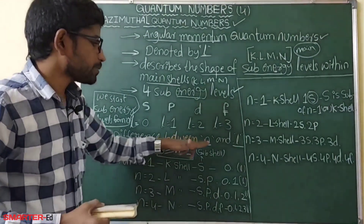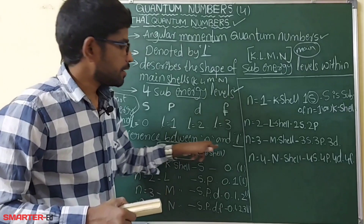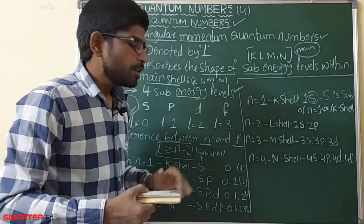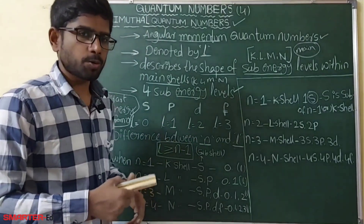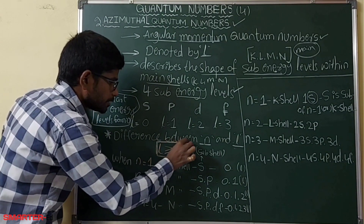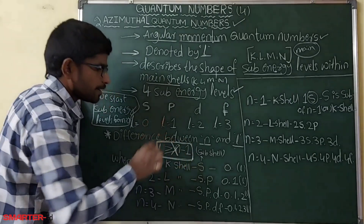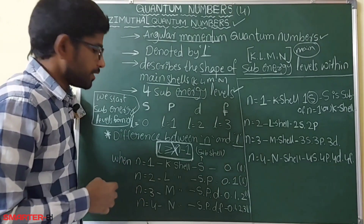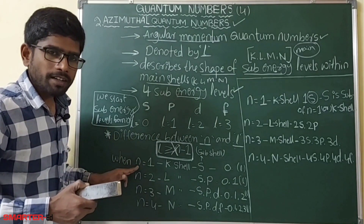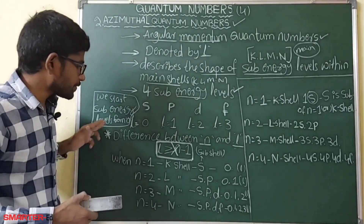Now what is the difference between small n and small l? Small n is the principal quantum number. The principal quantum number starts from 1, while the azimuthal quantum number l starts from 0.